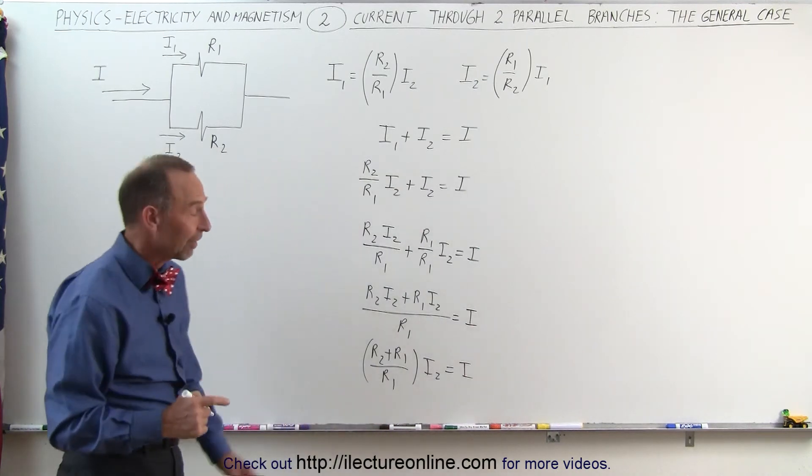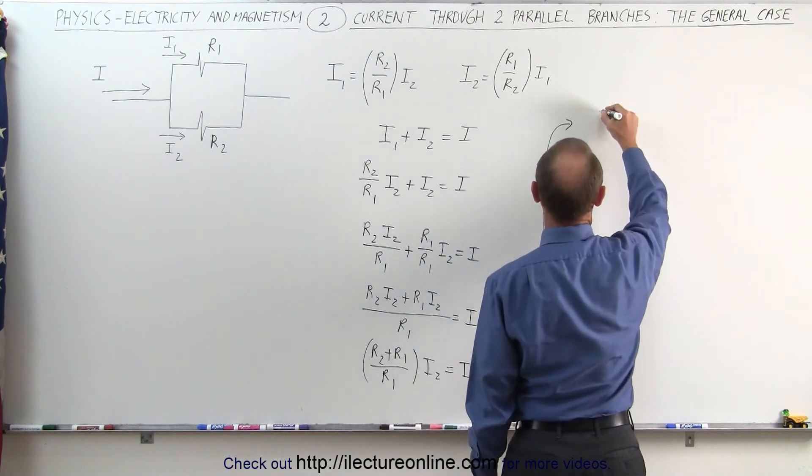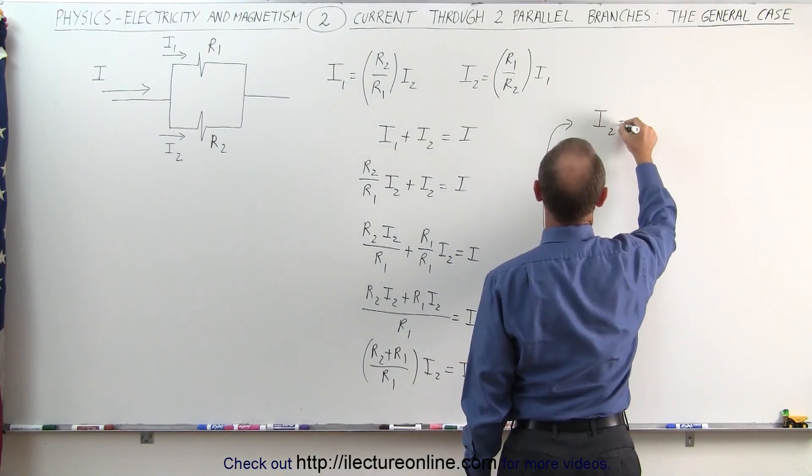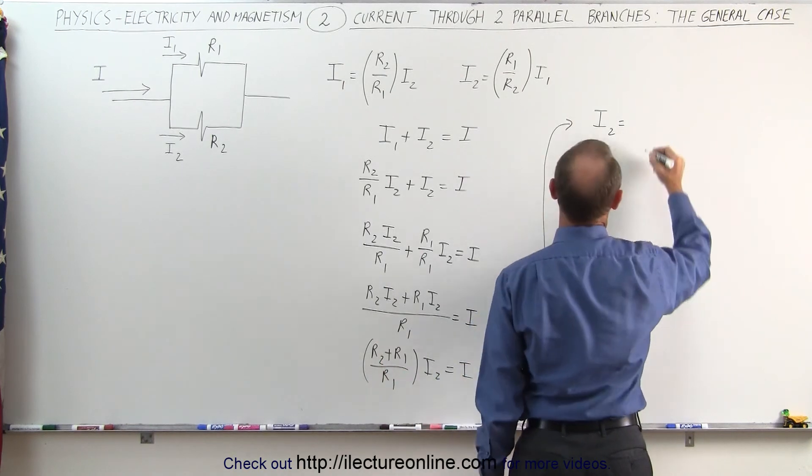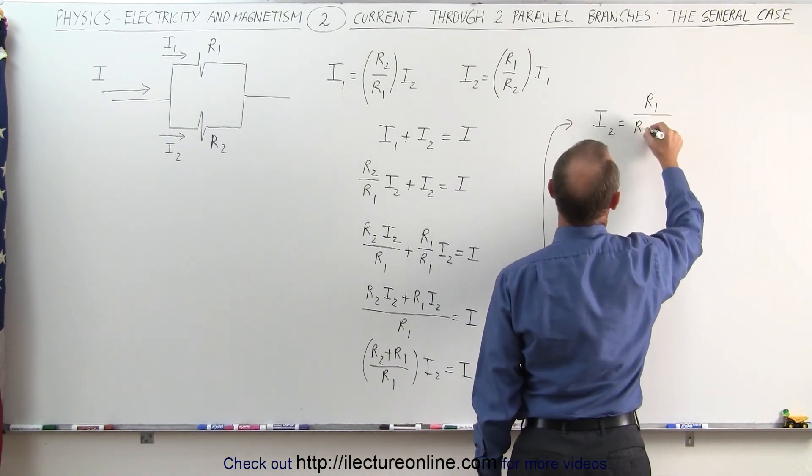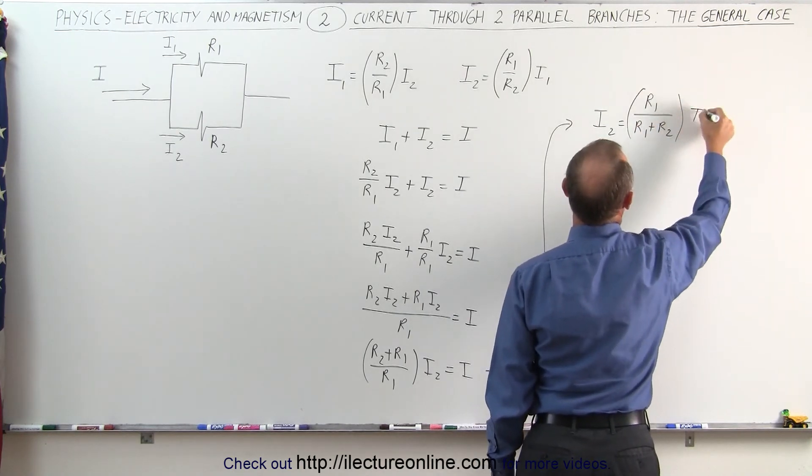And then finally, if I solve that equation for I2, I can come up here. I can then say that I2 is equal to the inverse ratio because R1 goes up here and the sum goes down here. So I can write R1 divided by R1 plus R2 multiplied times the total current.